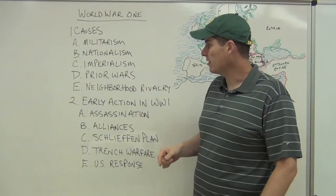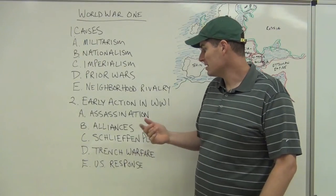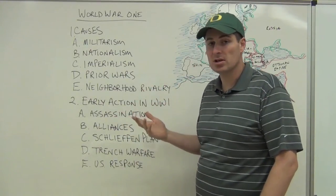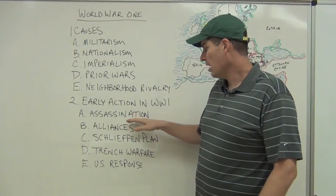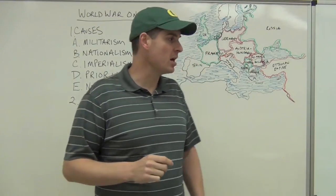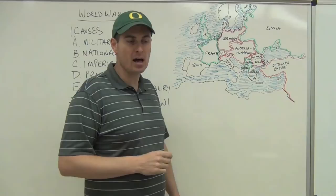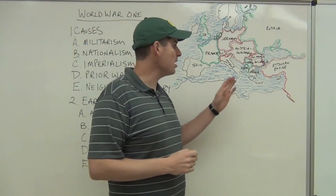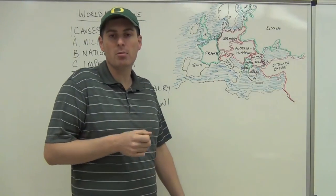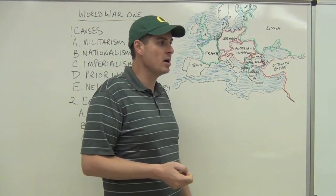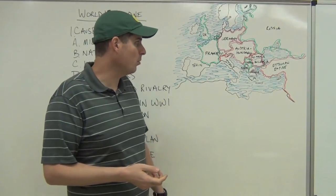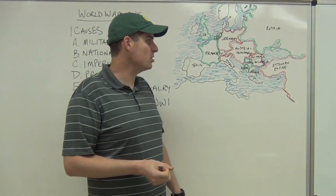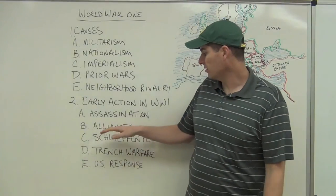One important cause I left for last is the alliance system. The early action in the war begins with the assassination of Archduke Franz Ferdinand, heir to the Austro-Hungarian throne, by Serbian nationalists. Austria-Hungary demands that Serbia basically be absorbed into their country, making very harsh demands. Serbia refuses, so they declare war — after checking with big brother Germany, who had built up a bigger military and sanctioned this. And here's where the alliances come in.